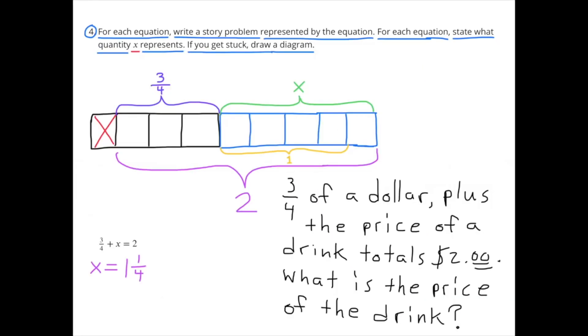Number 4: For each equation, write a story problem represented by the equation. For each equation, state what the quantity X represents. If you get stuck, draw a diagram. 3 fourths plus X equals 2. Well, I did draw a diagram, but first let me read my story. 3 fourths of a dollar plus the price of a drink totals 2 dollars. What is the price of the drink?